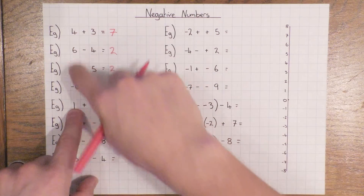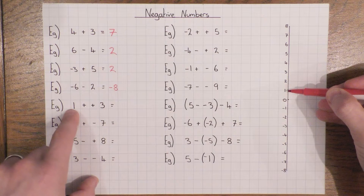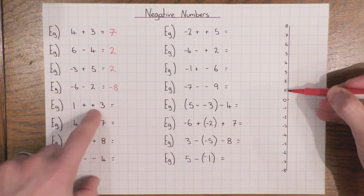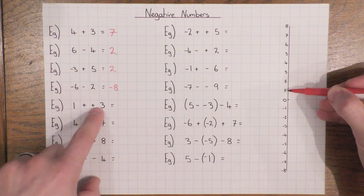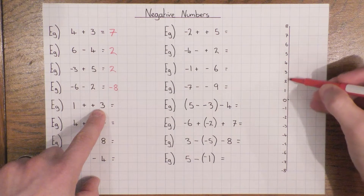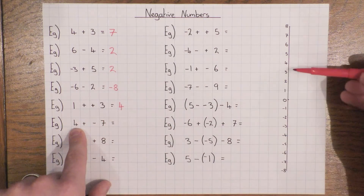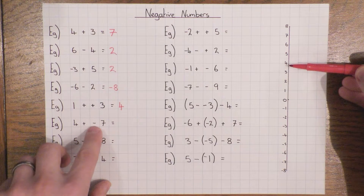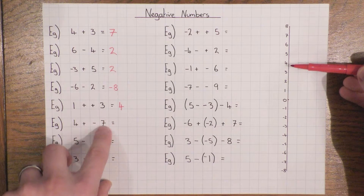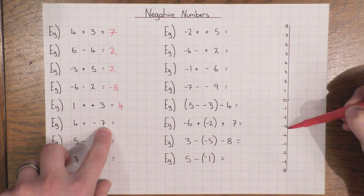The first number is always your starting point, so for one plus positive three: I'm starting at one degree. I'm going to add three hot coals, so my temperature goes up — I go up three on the number line to get four. For four plus negative seven: I'm adding ice cubes, so my temperature goes down. I'm on four and I go down seven to land on minus three.